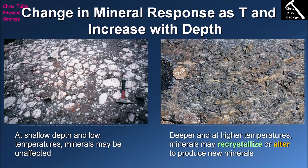The other possible event is alteration, where mineral A turns into mineral B with a completely different composition. Alteration often occurs where minerals are in contact with each other and react chemically once temperature and pressure become sufficiently high. The chemical reaction between two or more minerals produces a range of new minerals. The most important thing to remember is that the new minerals produced during alteration have a distinctly different composition from the original minerals.